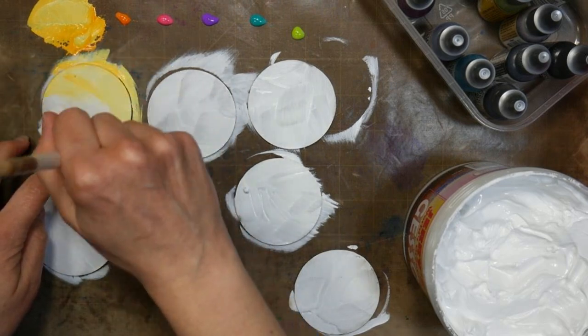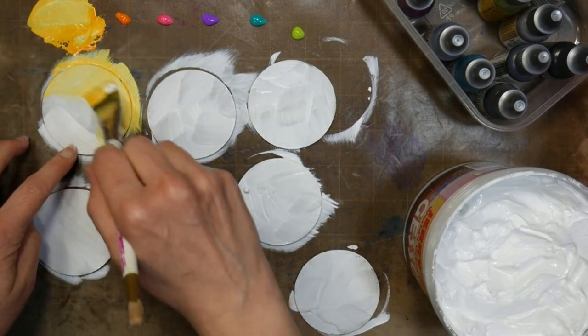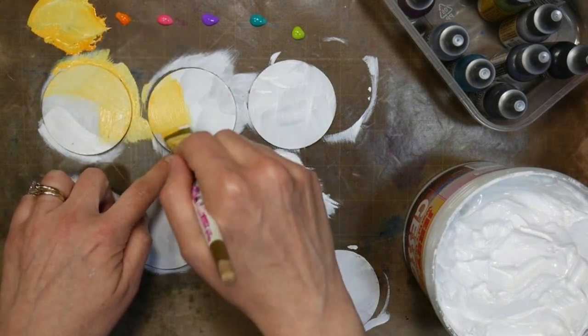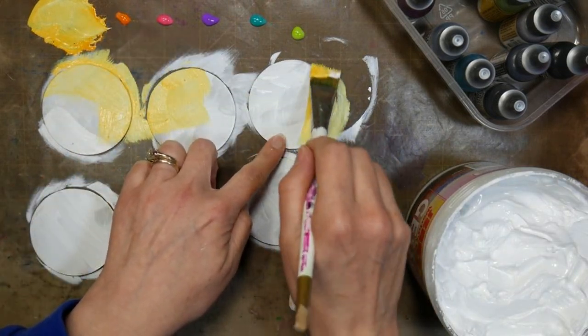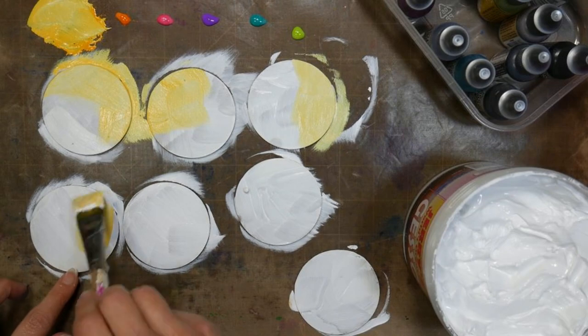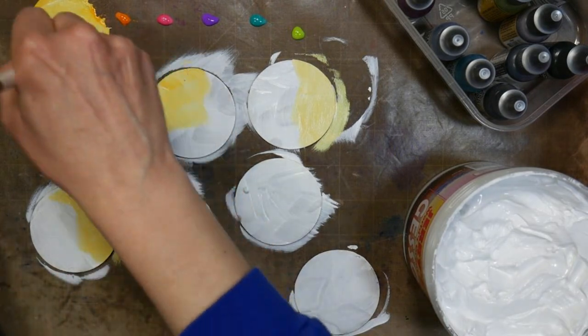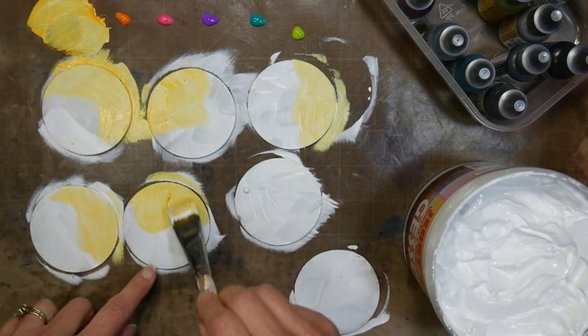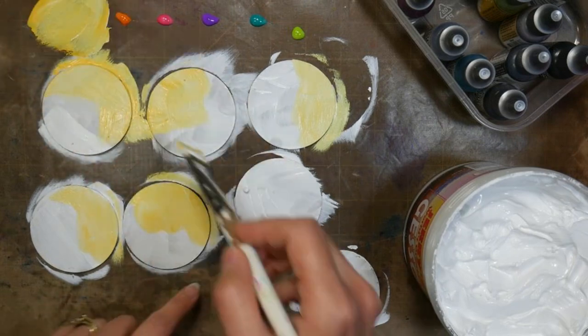I've added a little gesso into the distress oxide and it makes a really buttery opaque paint. I tend to use my distress oxides more like a paint than an ink because they're such a versatile color medium and they tend to be a little opaque on their own.